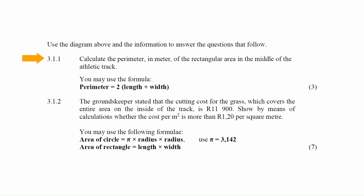In question 3.1.1, you are instructed to calculate the perimeter in meters of the rectangular area in the middle of the athletics track. You may use the formula: perimeter equals two times the sum of the length plus the width.